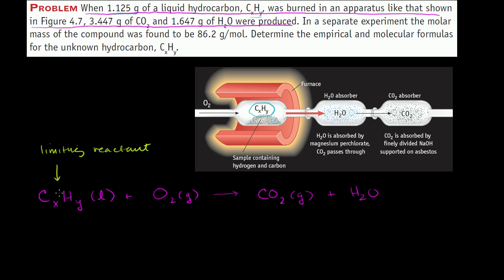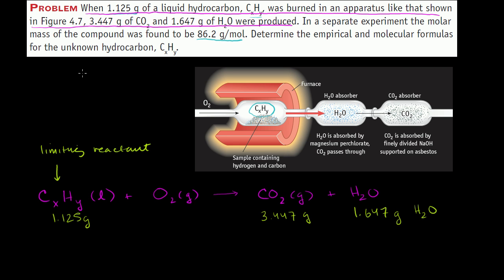We just have an abundance of oxygen — just enough to combust all of the hydrocarbon into carbon dioxide and water. They tell us we have 1.125 grams of the mystery substance, producing 3.447 grams of carbon dioxide and 1.647 grams of water. In a separate experiment, the molar mass of the compound was found to be 86.2 grams per mole.